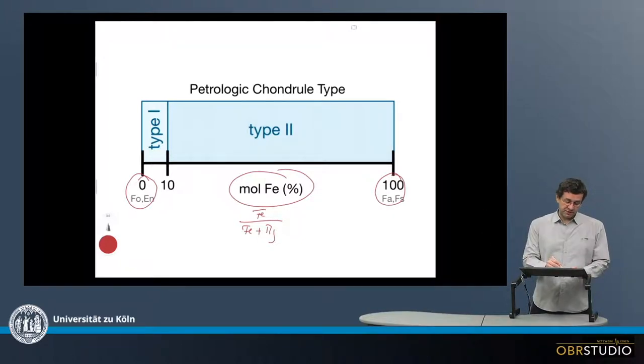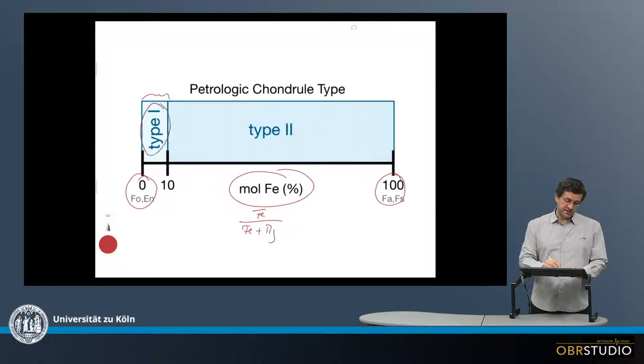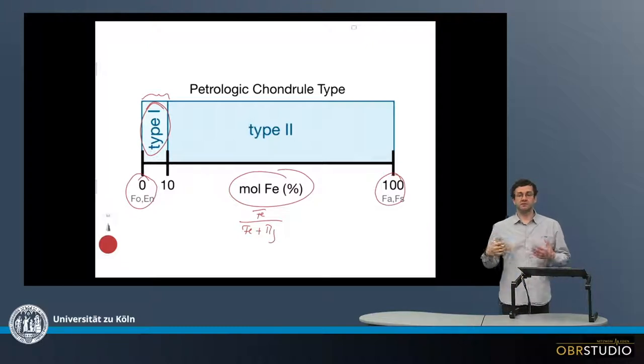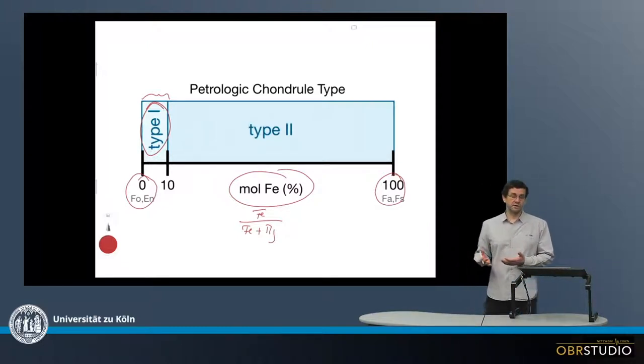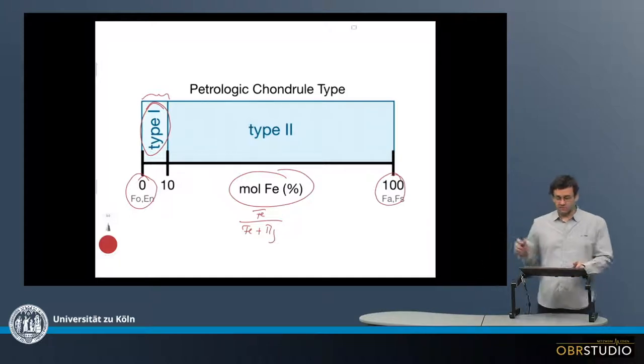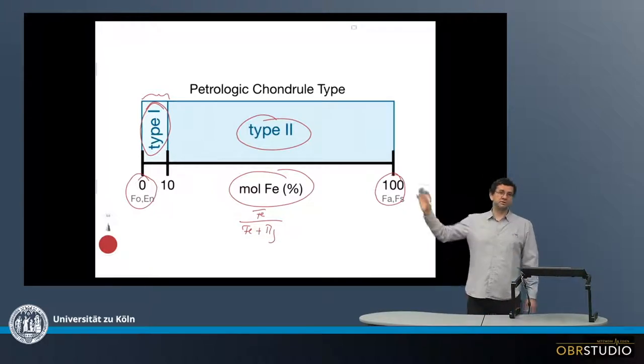We define type 1 here from 0 to 10, which means the type 1 chondrules are extremely magnesium rich and iron poor. All the other chondrules classify as type 2, so from 10% iron or iron number to 100%.